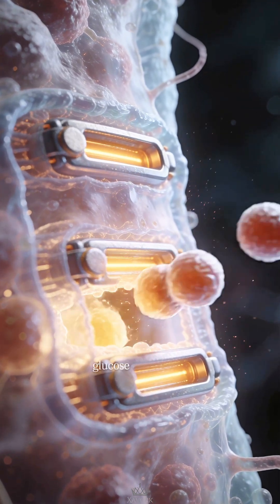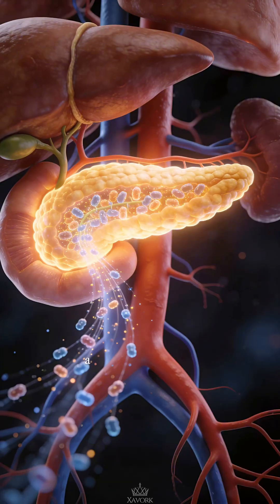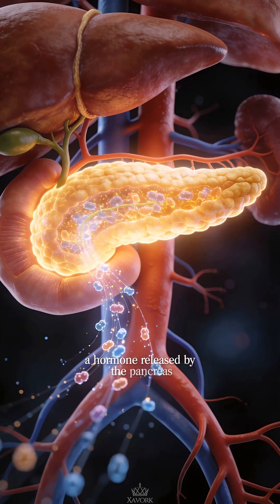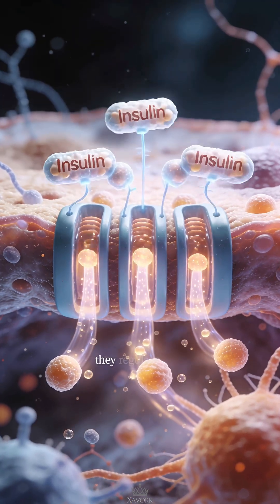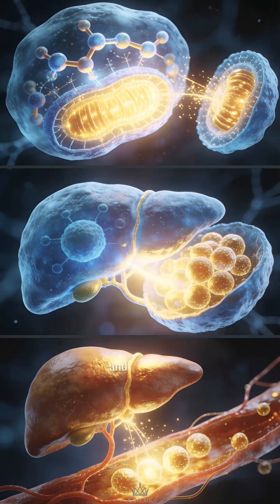Here, glucose enters cells with the help of insulin, a hormone released by the pancreas. Together, they regulate how energy is used, stored and released.